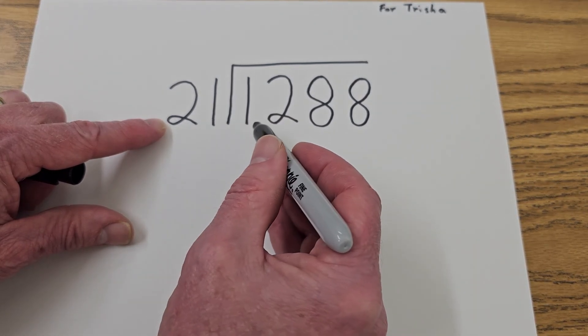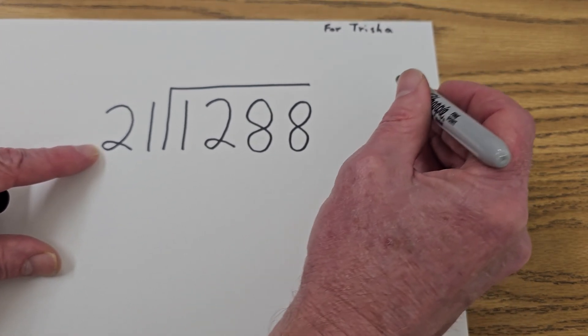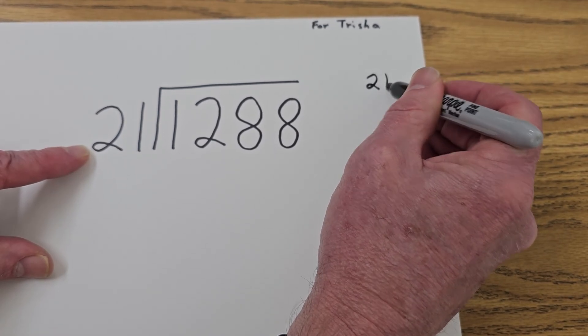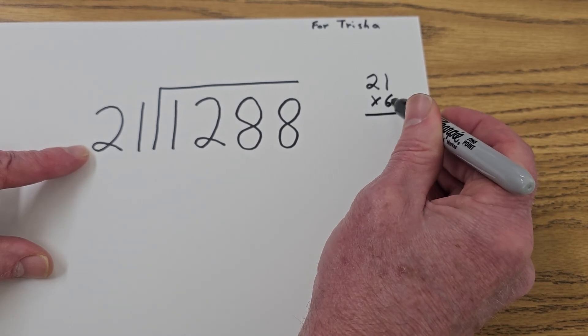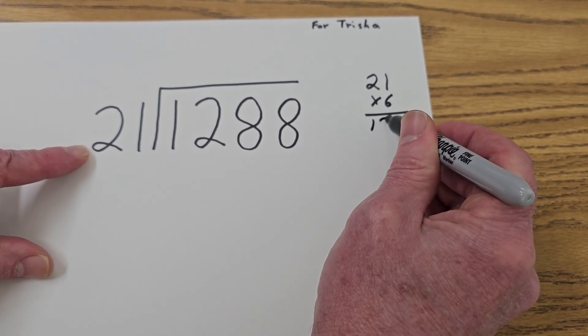So I'm kind of guessing right now, but I'm figuring if I take 20 times 6, it would be 120. So let's go right over to the side here and do a little figuring, a little calculation. I'm going to take 21 times 6. So 6 times 1 would be 6, and 6 times 2 would be 12.